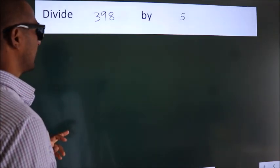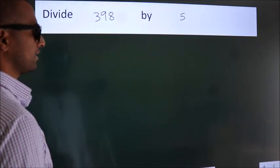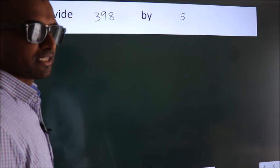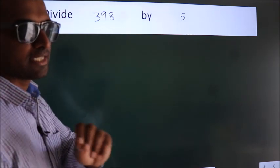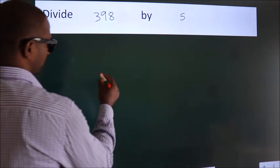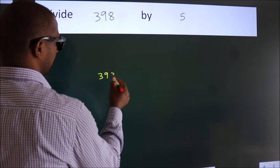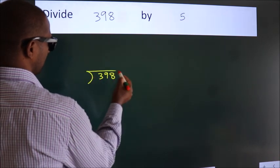Divide 398 by 5. To do this division, we should frame it in this way. 398 here, 5 here.